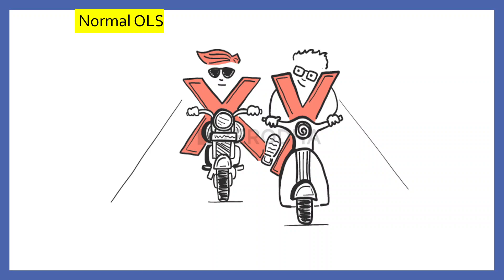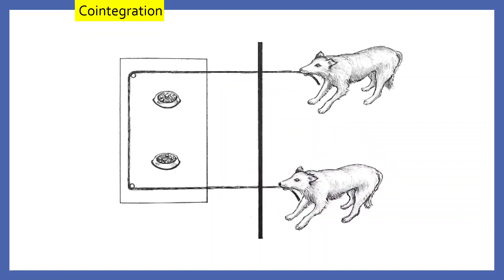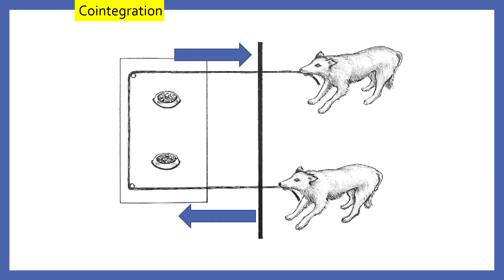We will start with normal OLS. In case of normal OLS, Y is influenced by X — X is an independent variable, Y is a dependent variable. Let us take another example to understand co-integration. Imagine that there are two wolves pulling a rope. When the upper one pulls the rope, in counter action, the lower one pulls it in the opposite direction.